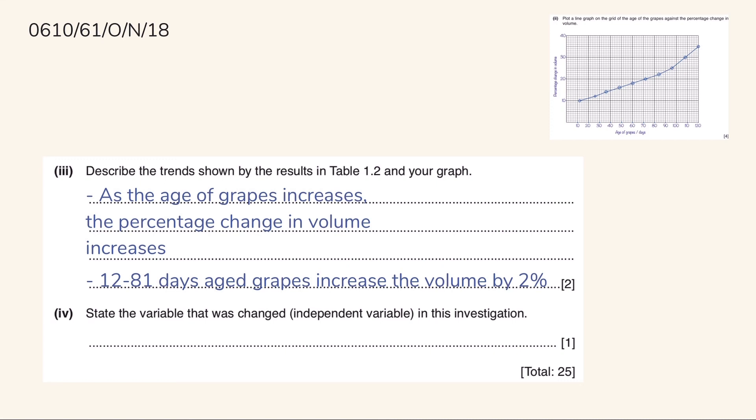In Part 4, it says to state the variables that was changed. So of course, the answer will be the age of the grapes.